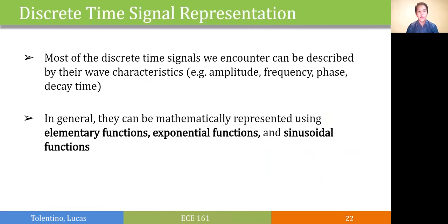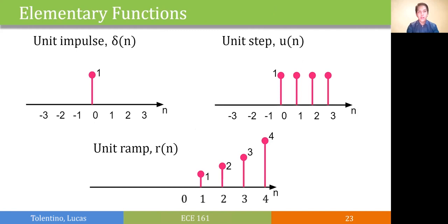Now let's go to signal representation. Most of the discrete time signals we encounter can be described by their wave characteristics such as amplitude, frequency, phase, or decay time. In general, they can be mathematically represented using elementary functions, exponential functions, or sinusoidal functions. If you recall, these are our elementary functions: the unit impulse denoted by delta of n, the unit step by u of n, and the unit ramp by r of n.